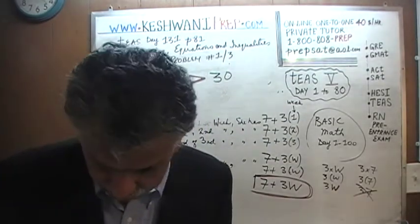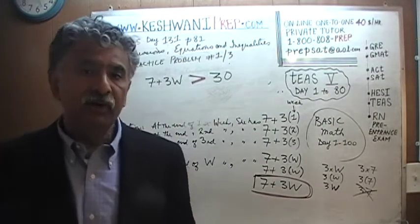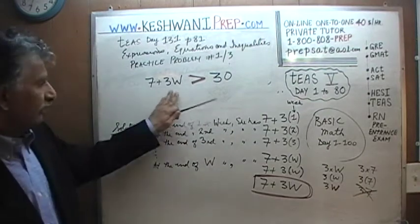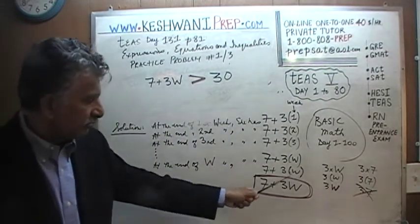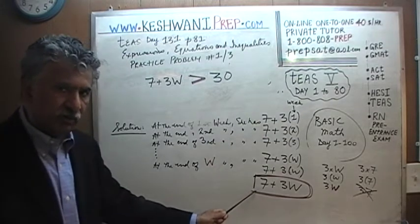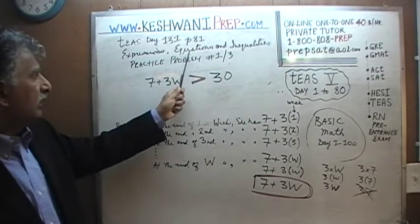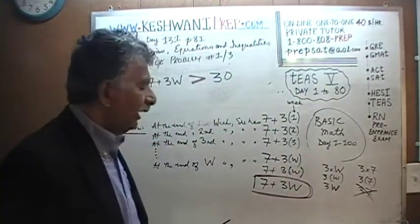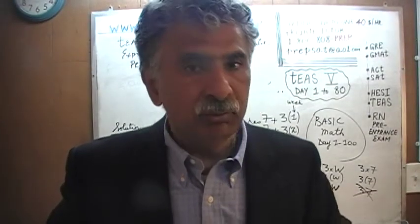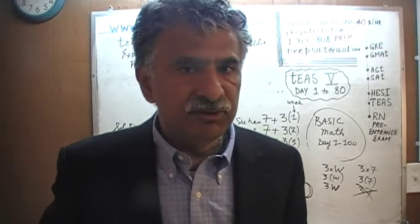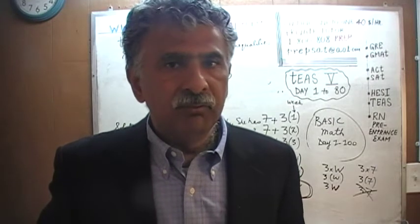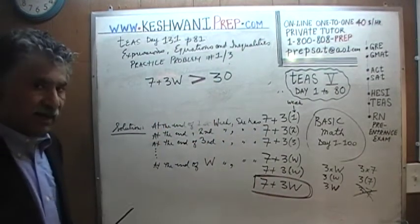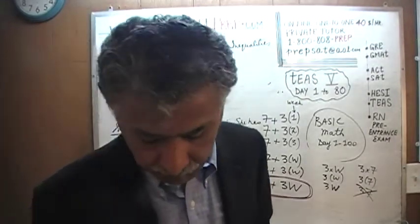The exam doesn't actually ask us to figure out the value of W — they're not asking us to solve for W. They just want the expression, or rather the inequality. But first we start with the expression representing the cards at the end of W weeks. Once we have the right expression, we decide: are we dealing with an equation or an inequality? The answer is an inequality, because the question asks for more than 30 cards, not exactly equal to 30.